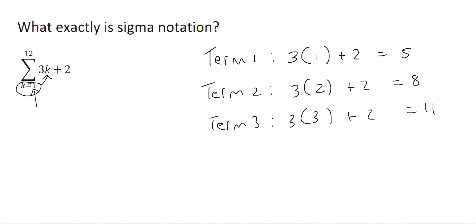When would you stop? You would stop when your k number gets to this part over here. So you'd go all the way down to term, I think in this case, it would probably take us to term 12, which would be 3 times 12 plus 2, which would then be 38.